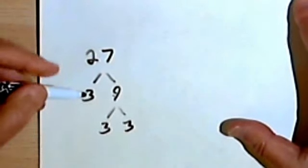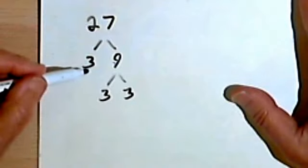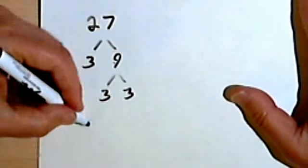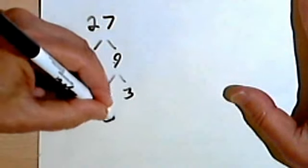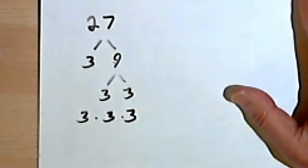So what that means is my factors of 27 are 3, 3 and 3. So I'm just going to write them over here. 27 is the same as 3 times 3 times 3.